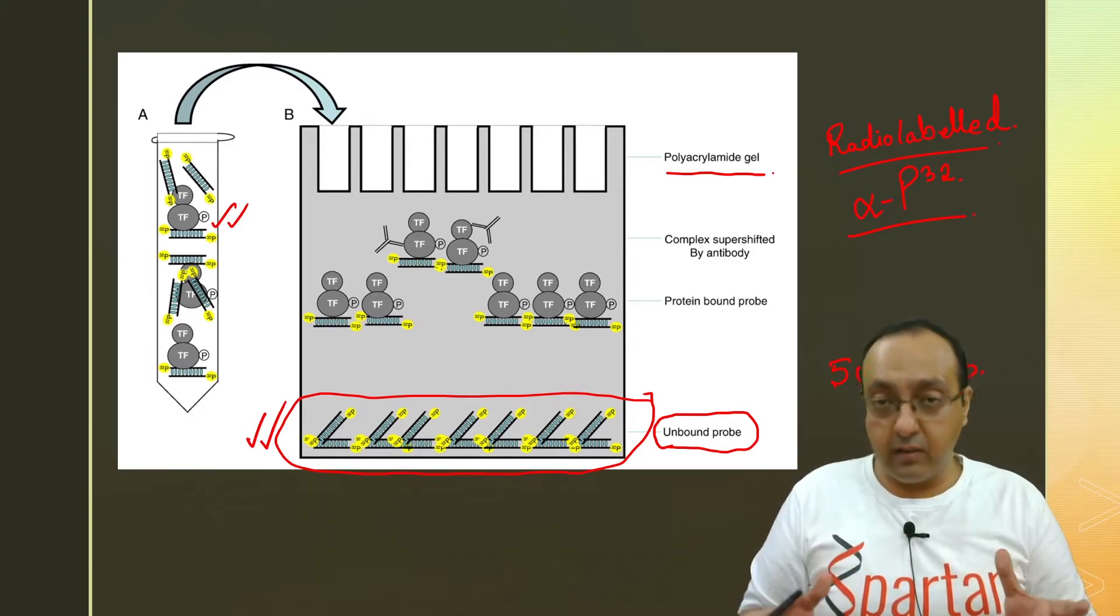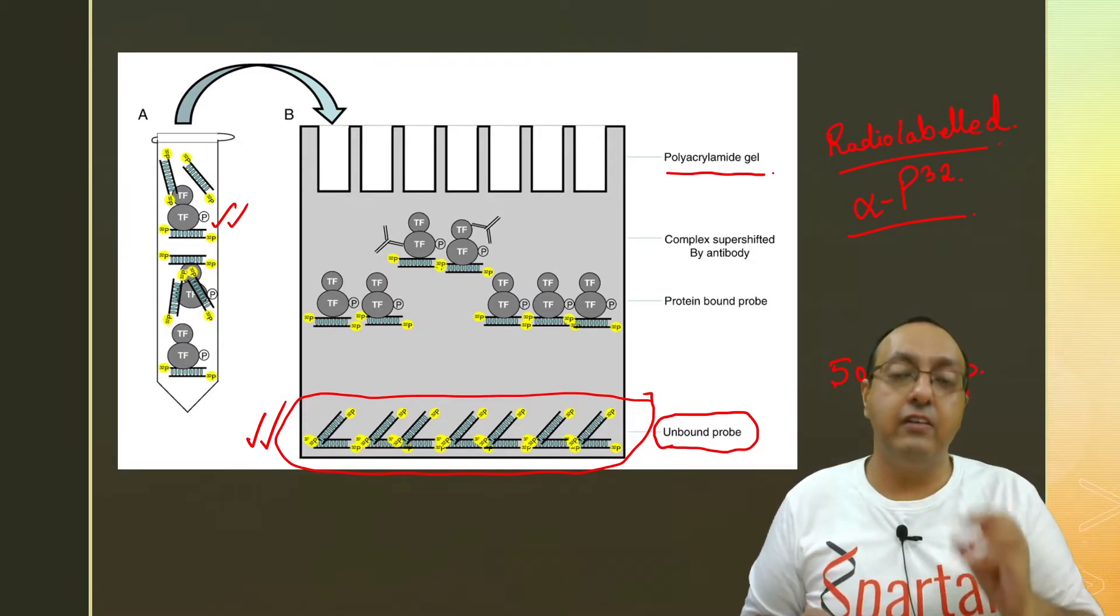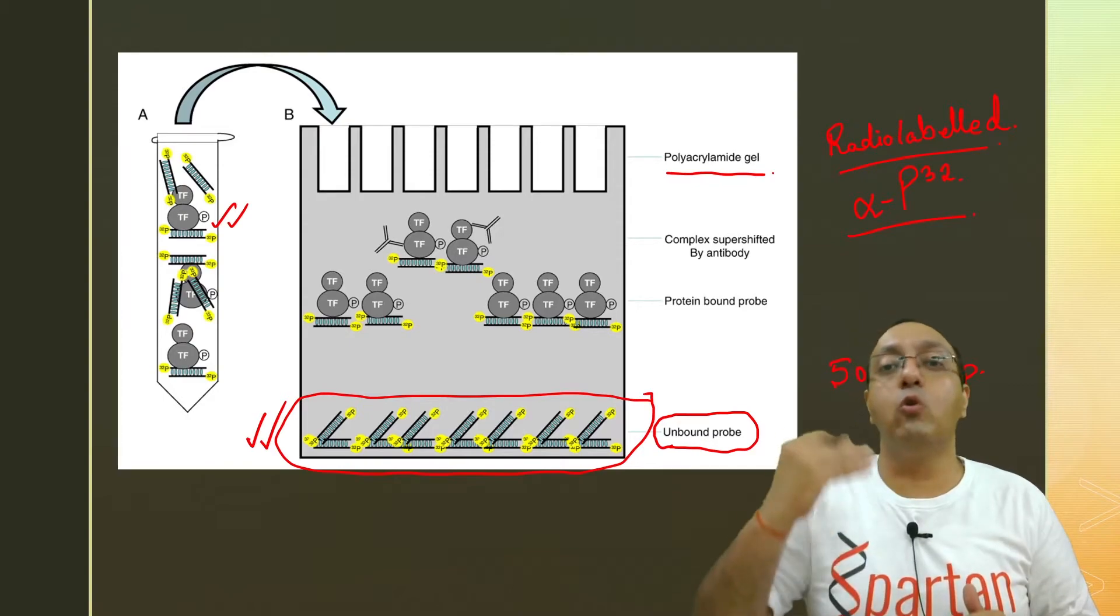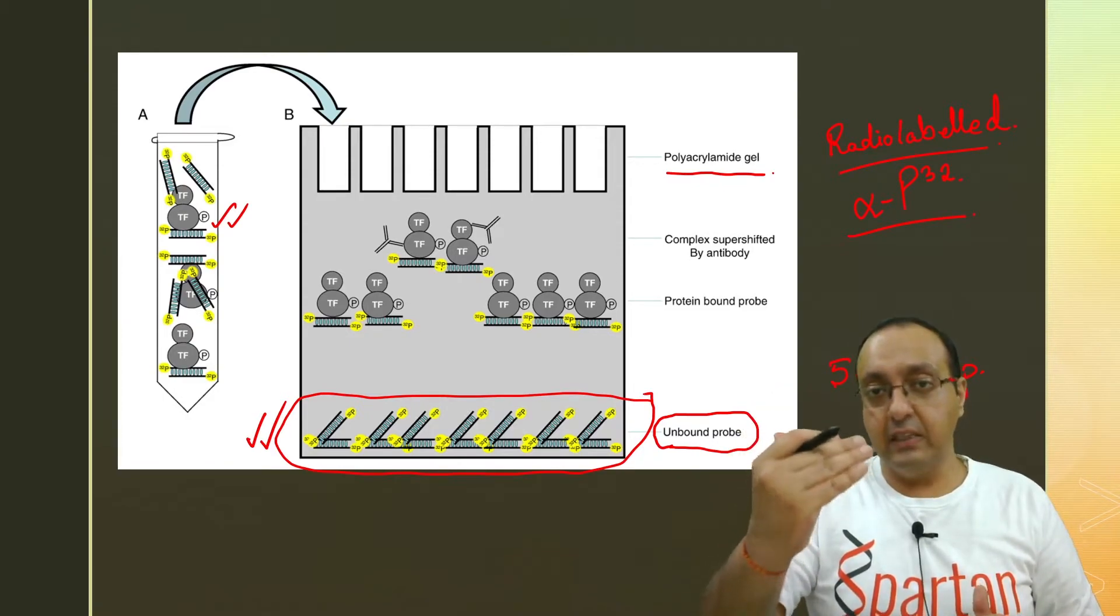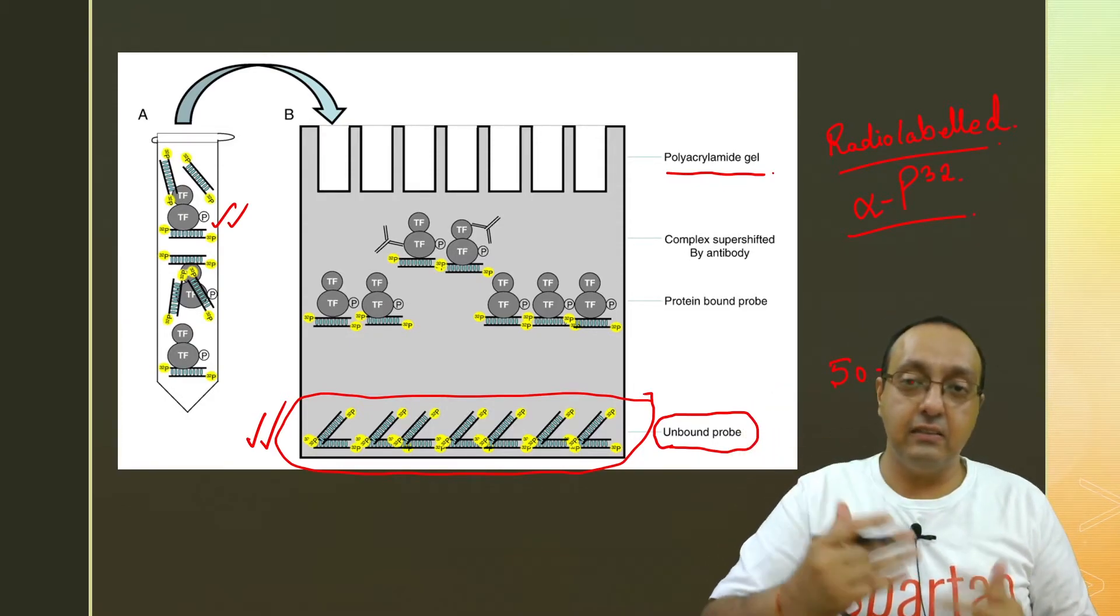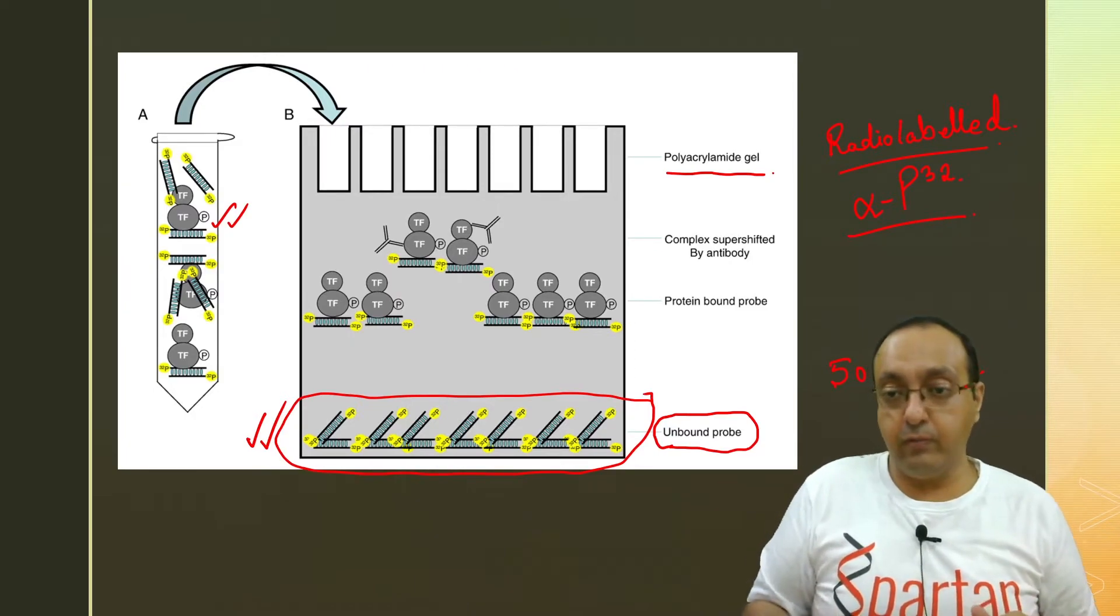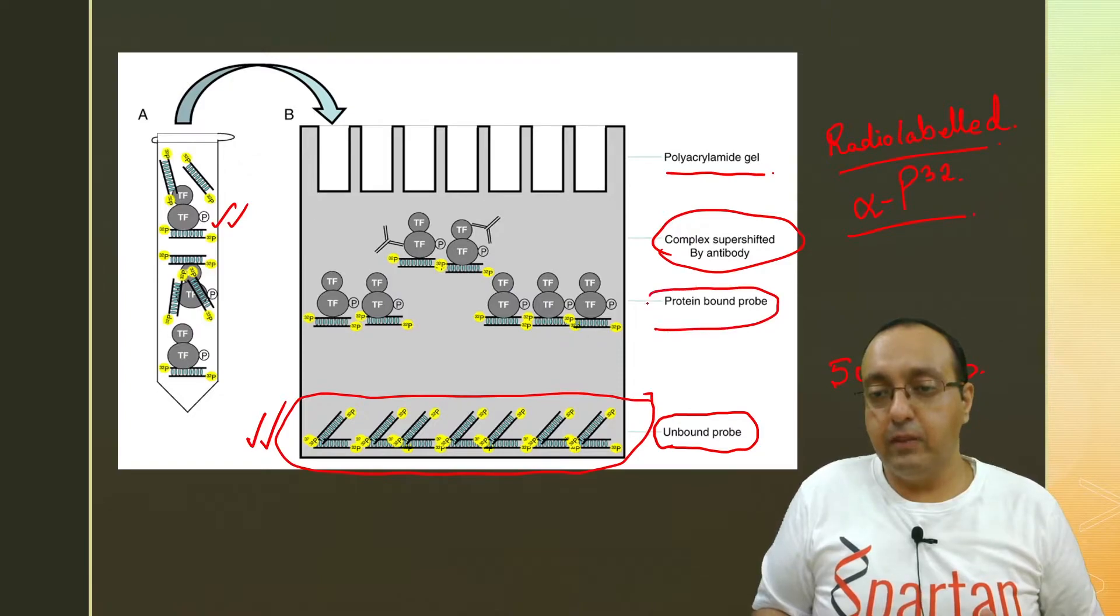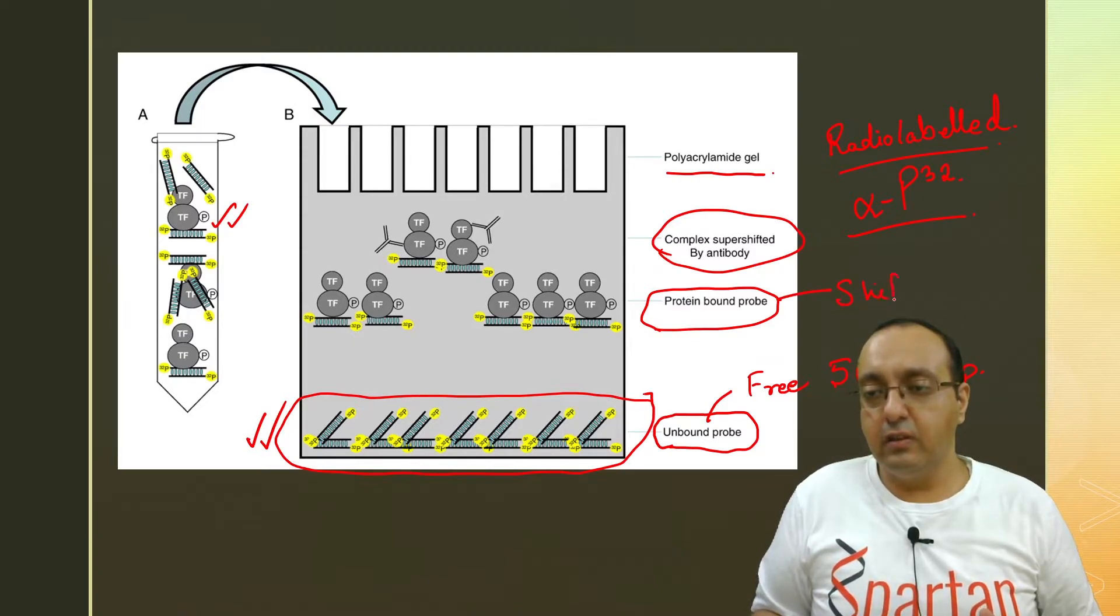And it can be further enhanced if you have specific antibodies for your protein. So what will happen is you will get even more higher weight molecular complex formed. And that is called a super shift. So this is a super shift. So we have free probe. This is shift. And this is super shift. That is the overall idea. Very simple to execute.